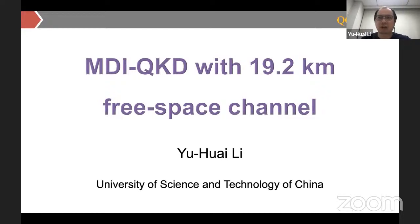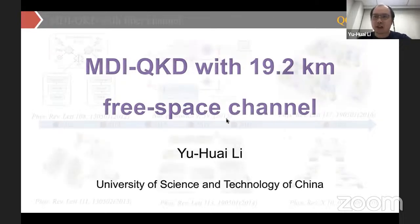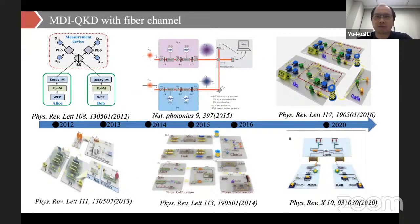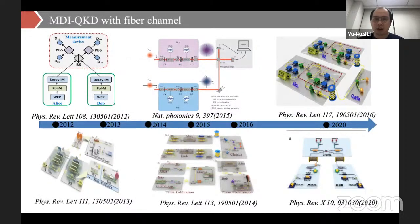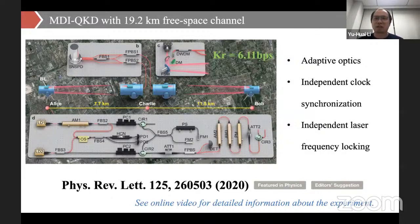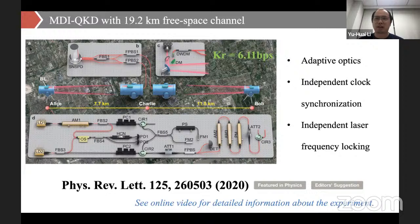Due to its excellent realistic security, MDI-QKD has been rapidly developed in recent years. However, all previous works were performed over fiber channels. Due to the high loss in long-distance fiber channels, it is not suitable for large-scale application. For a global-scale quantum network, demonstrating MDI-QKD in free space is required. Different from fiber channels, the atmospheric turbulence in free space makes it difficult to guarantee optical pulse indistinguishability. We developed a series of techniques such as adaptive optics to improve single-mode fiber coupling efficiency, and independent clock synchronization and independent laser frequency locking to ensure indistinguishability in time and wavelength domain.